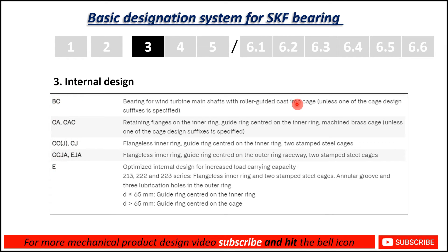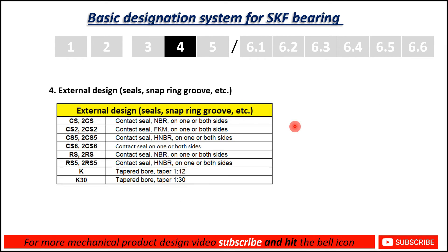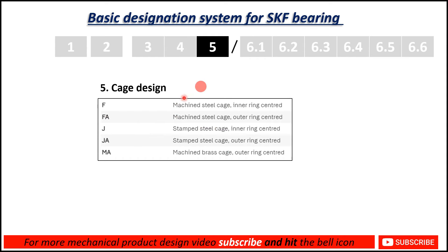Suffix group three shows the internal design and the shortcodes used for it, along with their descriptions. Suffix group four shows the external design, such as seal, snap ring, and groove. These are the short forms used to define the external design. Next is the cage design, where short forms are used after the bearing series number.